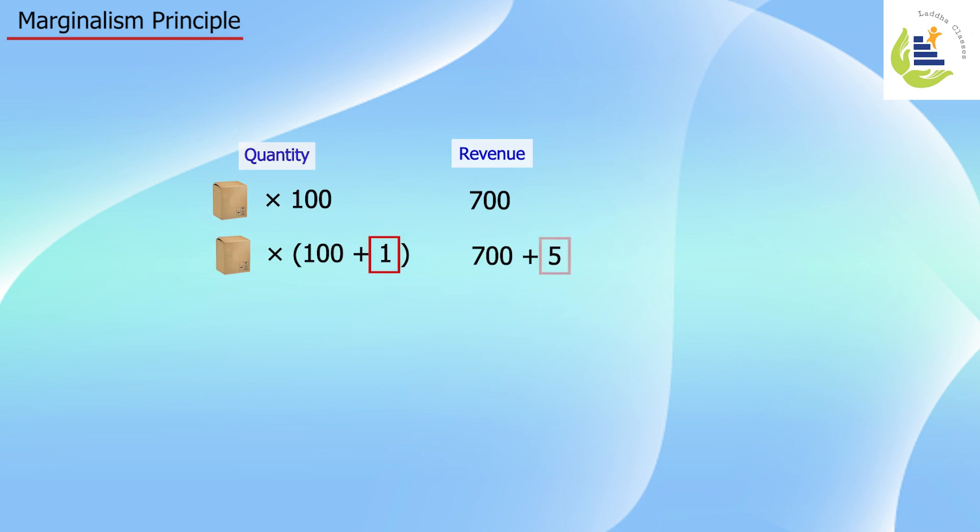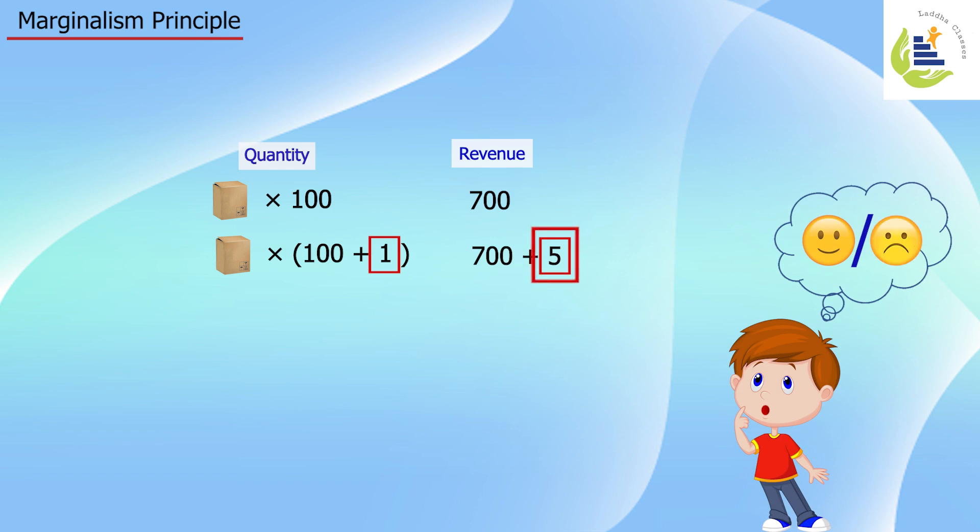Now as a producer, I have to decide: shall I be happy to get five additional rupees with one additional unit? I sold 100 products and got 700 rupees, which means seven rupees per product. Now with this addition, my revenue is not increasing by the same level - the change in revenue is not seven rupees but five rupees. Shall I go for that 101st unit?